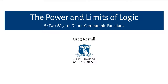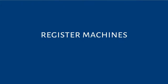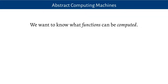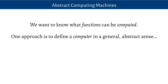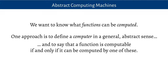In this second video for the section, we're going to look at the other way to define computable functions: register machines. An abstract computing machine is another way to understand what kind of functions can be computed. We define a computer in a very general and abstract sense and say that a function is computable if it can be computed by one of these computer things. The kind of computer thing we'll be using is what's called a register machine.